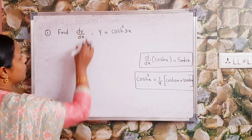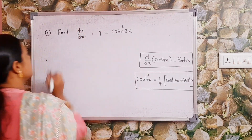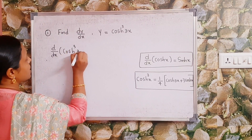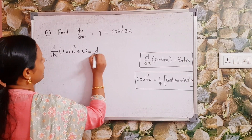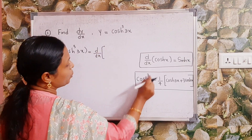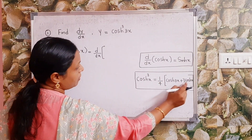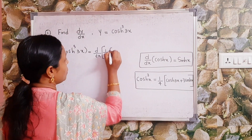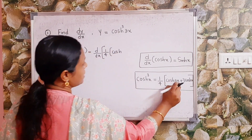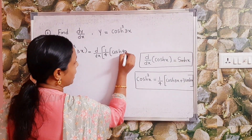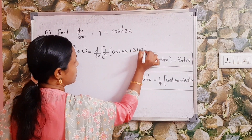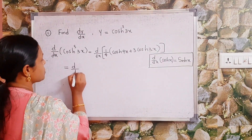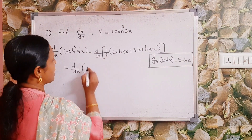Here we have to find dy/dx given that y = cosh³(3x). We write d/dx of cosh³(3x). Using the identity, cosh³(x) = (1/4)(cosh(3x) + 3cosh(x)), and substituting x = 3x, we get cosh³(3x) = (1/4)(cosh(9x) + 3cosh(3x)). So we write d/dx of (1/4)cosh(9x) + (3/4)cosh(3x).